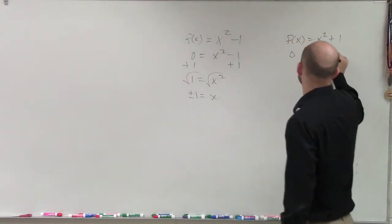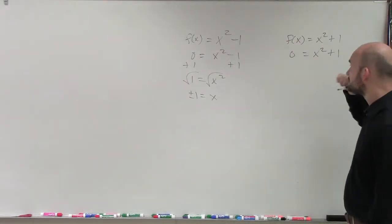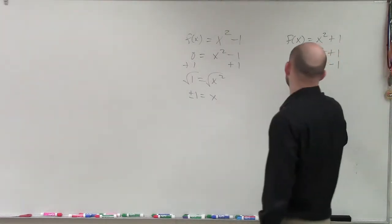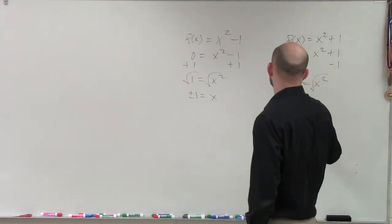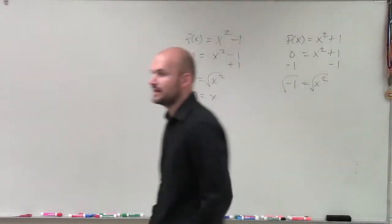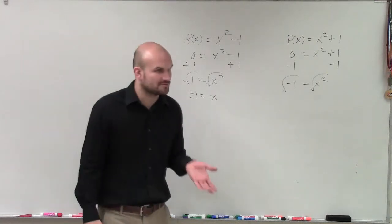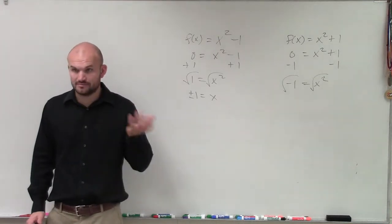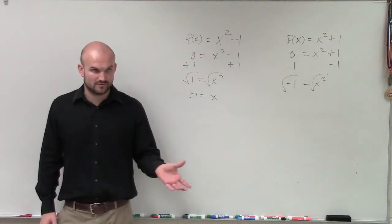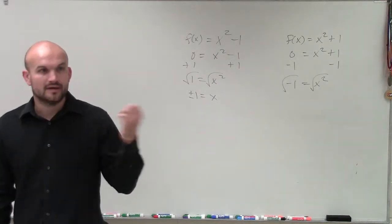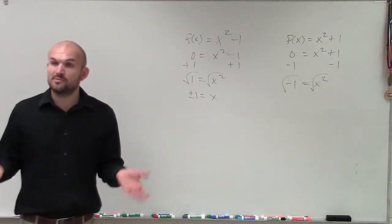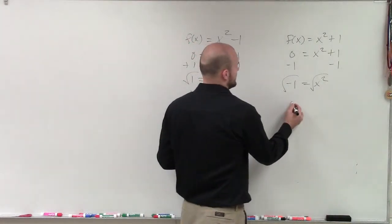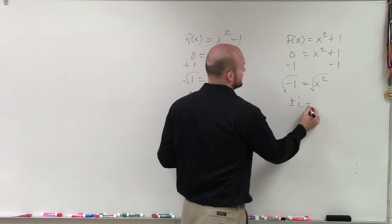Now, on your homework quiz, you had a problem like x squared plus 1 equals 0. Setting this equal to zero and solving by the square root method — subtracting on both sides — we have an issue: we're trying to take the square root of a negative number. What two identical numbers multiply to give negative 1? That's impossible, because negative 1 times negative 1 is positive 1, and positive 1 times positive 1 is positive 1. So we replace the square root of negative 1 with plus or minus i, meaning x equals plus or minus i.